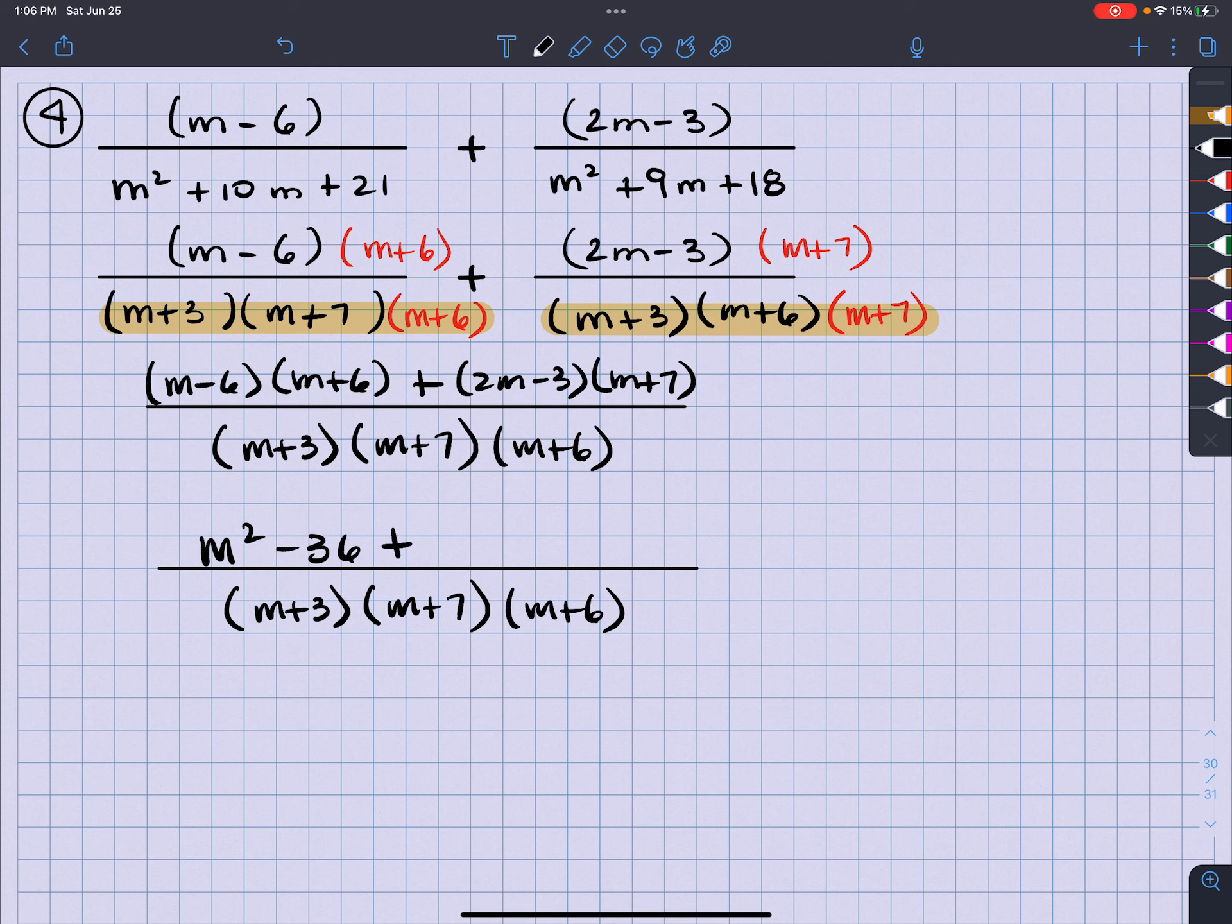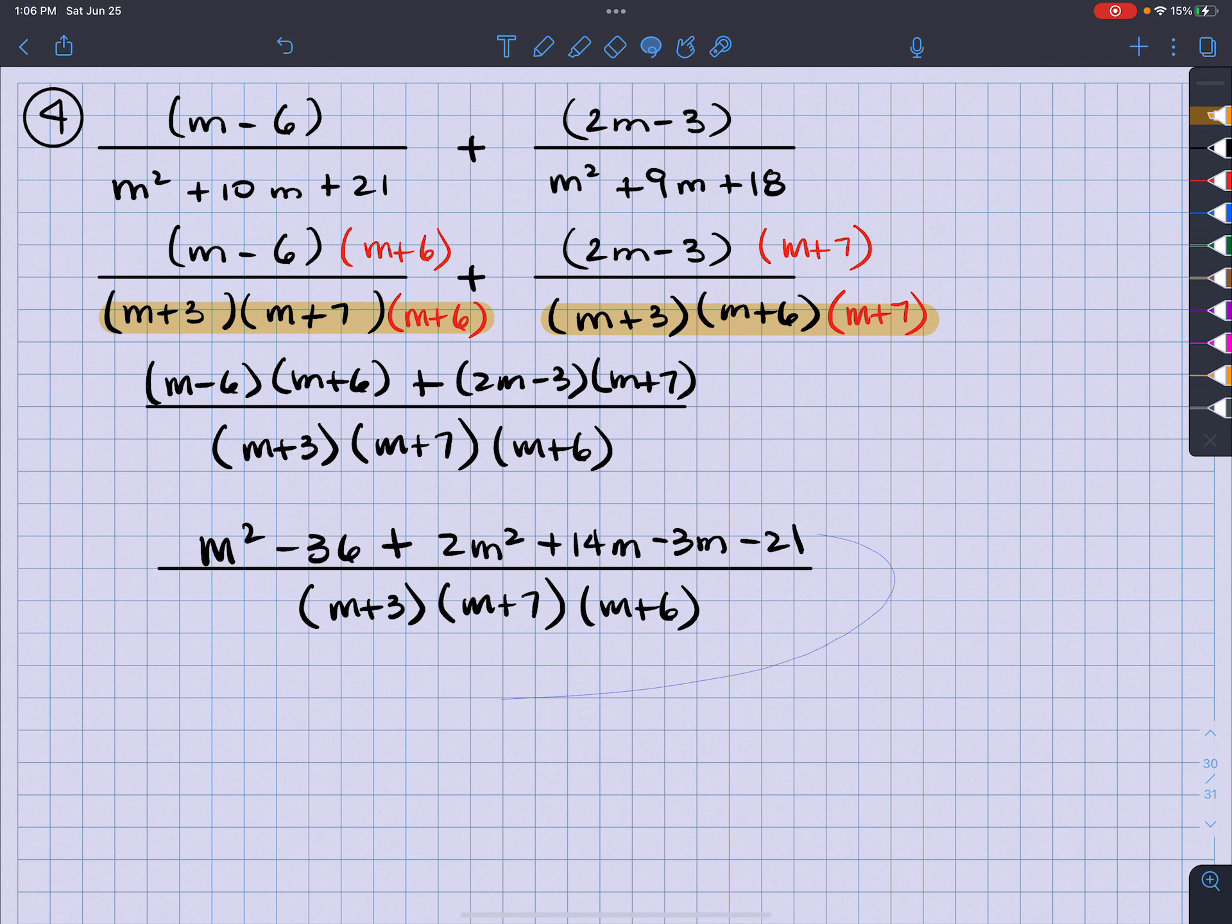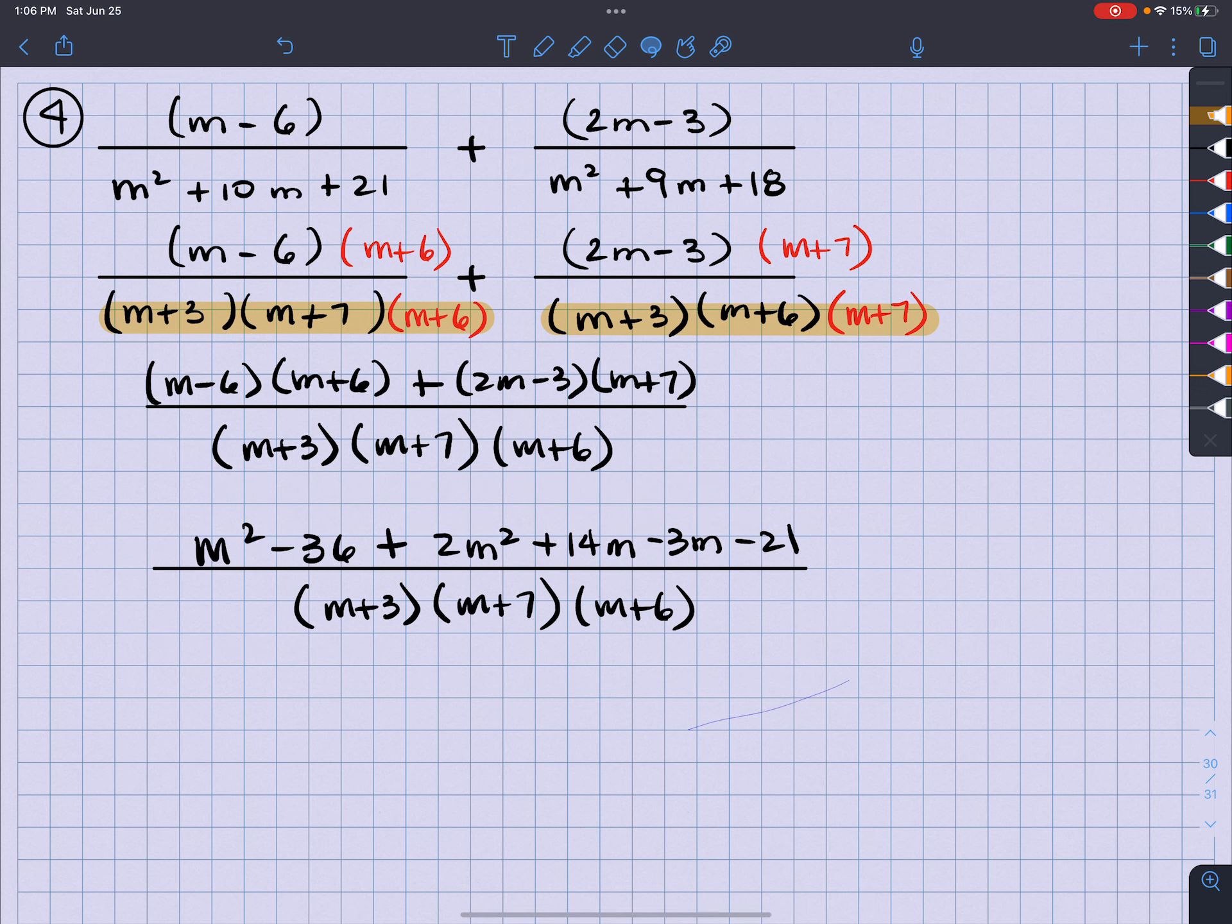Plus this here, I do have to FOIL out. So what do I get there? I'm going to get a 2M squared plus a 14M minus a 3M and minus a 21, which tells me this fraction is not long enough. There we go. And let's move this and center this out.